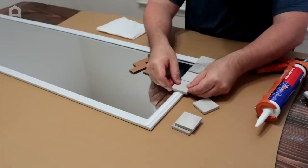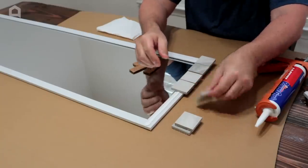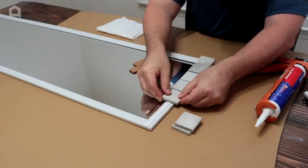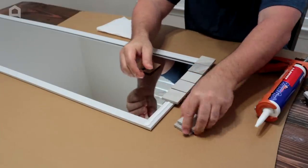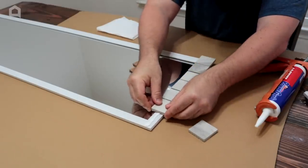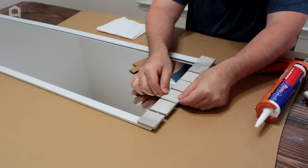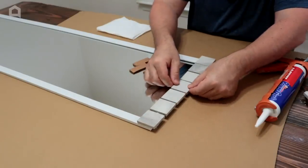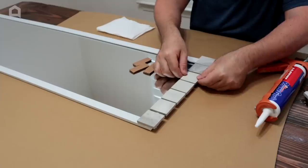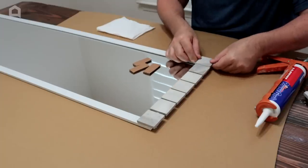But this glue doesn't set up right away so all you got to do is just firmly set it on there all the way across. And then what you do is you can still move them before that glue sets up. Look at that right there. Get your perfect spacing.